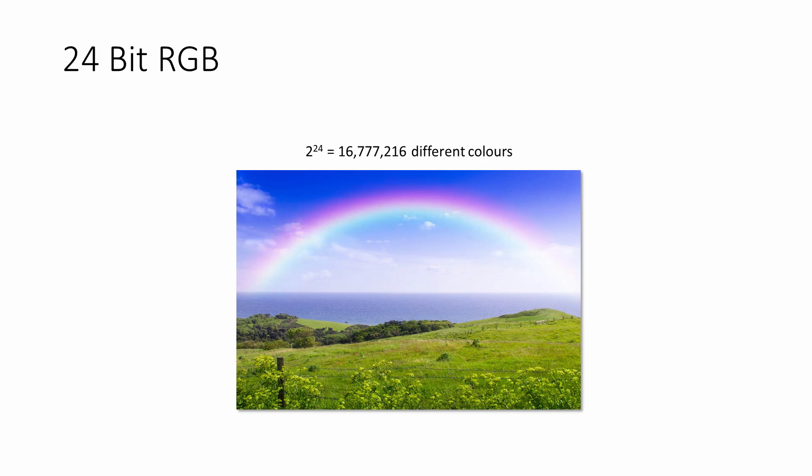If you've ever seen a rainbow in the sky, then you've seen white light being split into a spectrum of different colours — in essence the opposite effect. In fact, your computer screen relies on this principle, because it too is made up of pixels. When magnified, each screen pixel can be seen to consist of three tiny lights — one red, one green and one blue. These lights are controlled independently for each screen pixel to create the illusion of a single colour.